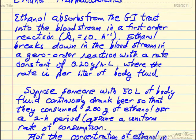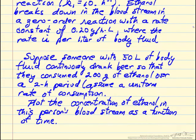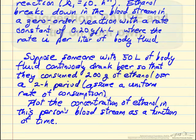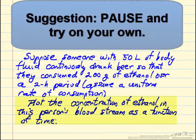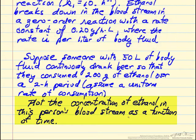We're going to look at modeling this as a kinetic process using someone who has 50 liters of body fluid. Let's suppose they continuously consumed alcohol, slowly sipping a beer for example. They consumed 200 grams of ethanol over a two hour period, and we're just going to assume that this is a uniform rate. The question is, what's the concentration of ethanol in the bloodstream as a function of time?